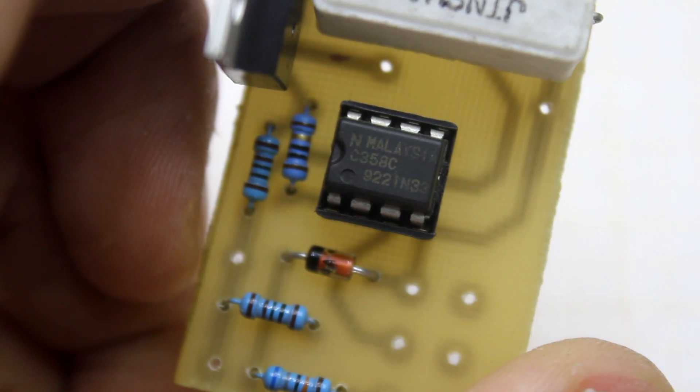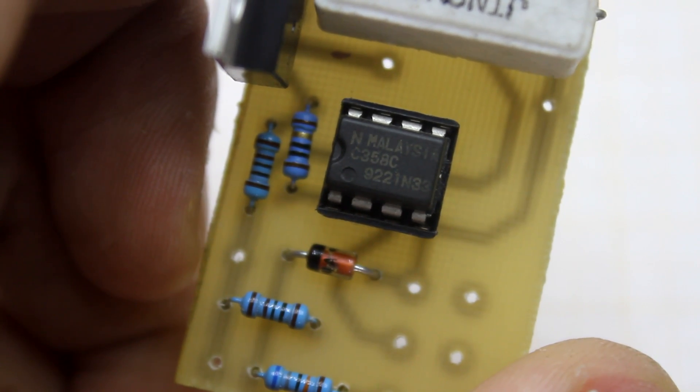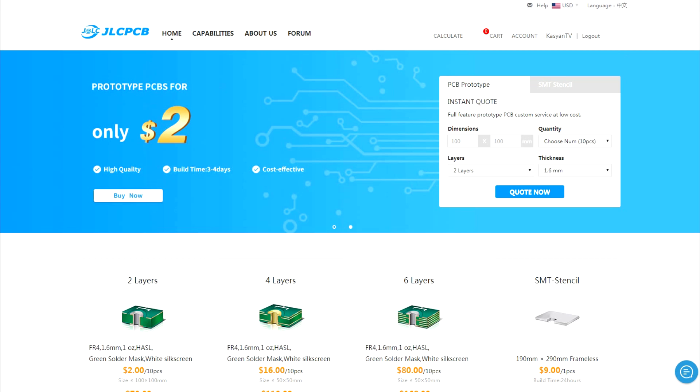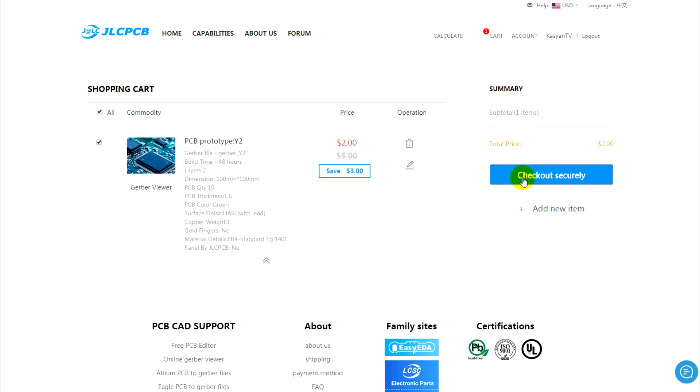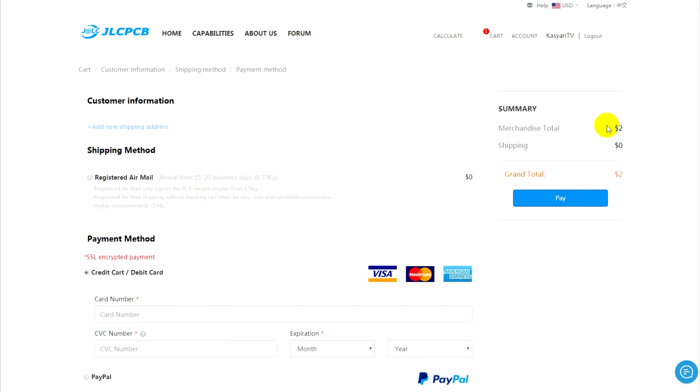An important part of any electronic project is a printed circuit board. If you order them on the JLCPCB website, you will get an ultra-low price, starting from $2 for 10 pieces and free delivery for the first order.